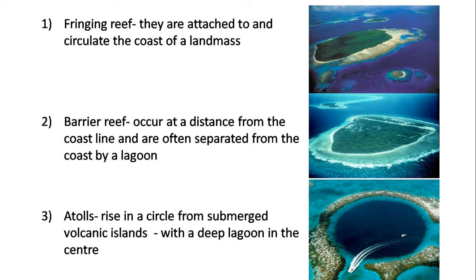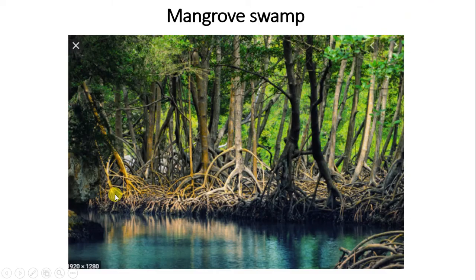Barrier reefs are often separated from the coast by a lagoon. A lagoon is formed usually behind a bar — we looked at the structure of a spit and tombolo, where a spit connects to headlands. Coral atolls rise in a circle from a submerged volcanic island, with a deep lagoon usually in the center.